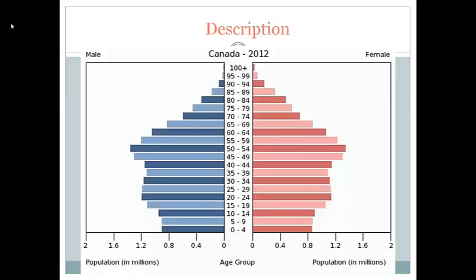Here is the population pyramid for Canada in 2012. You'll notice that they use bars to represent males and females. The blue bars represent the males and the red bars represent the females. Up the center you'll see that age groups are indicated, going up in increments of five years.